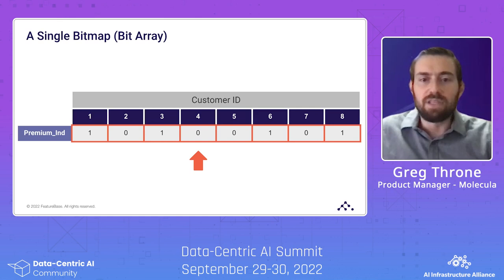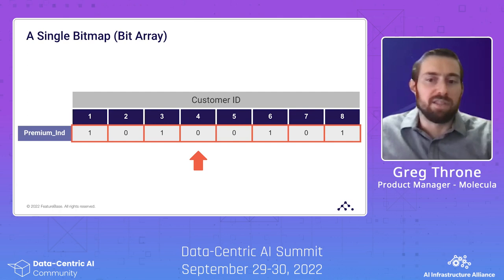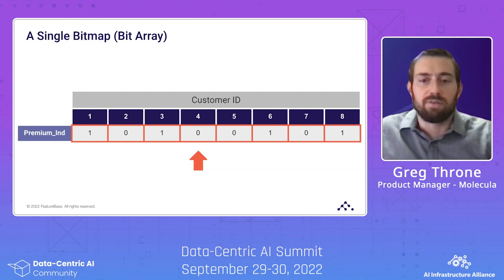So why do we want to store things as bitmaps? From a really high level, bitmaps are computers' natural language, usually called machine code. So bitmaps, in theory, should be able to be read in by CPUs with less overhead than other formats. Bitmaps also lead to a large reduction in disk footprint because only a single bit is needed to store the mapping to that value as opposed to the entire value each time.